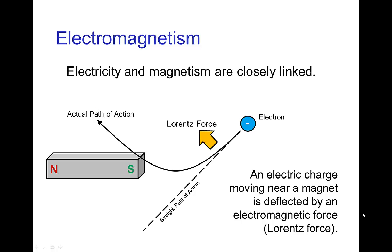Electromagnetism. So electricity and magnetism are closely linked. We've already saw that using electric current we can produce an electromagnet.